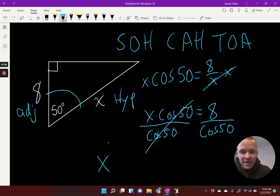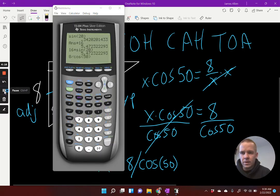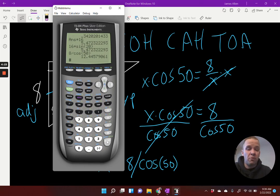Now in my calculator, I can get x equals 8 divided by cosine of 50 degrees. So that's what I'll type in my calculator. Let's go ahead and do that. So now I've got 8 divided by cosine of 50. If I hit enter, 12.4457. So 12.45.